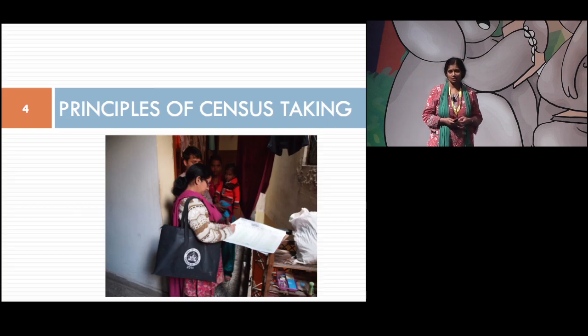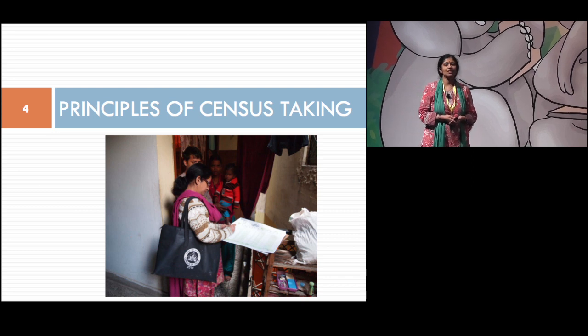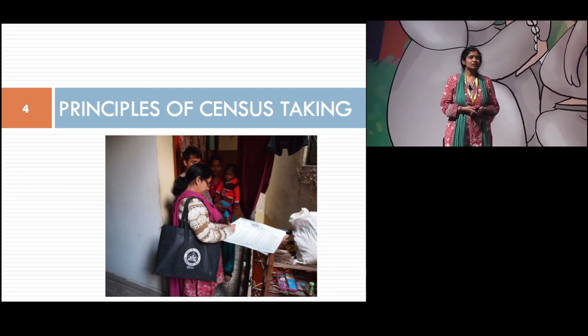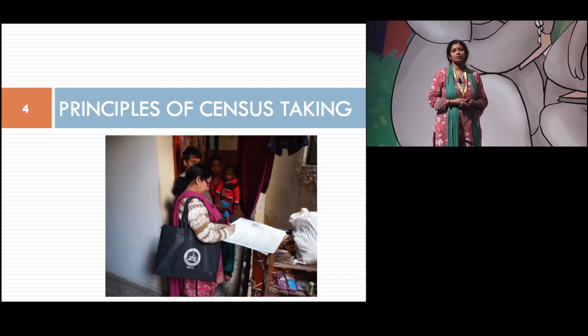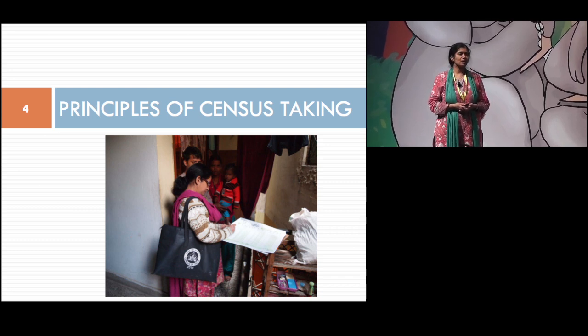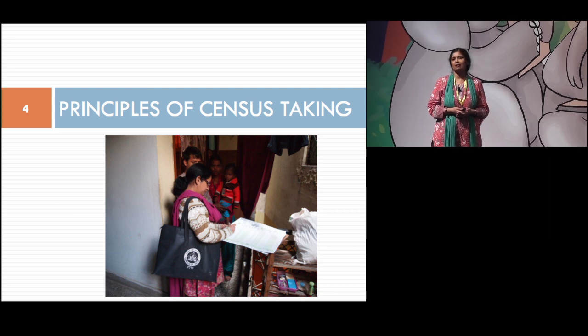So how do we go around doing this? How come we are able to give you the original population very early, weeks after completing the census? Of course, we have a long history, we've been learning over time. The first time we did the census was in 1872. But there's something more to how we do it, it's the basic principles on which we do the entire work, that make sure that we give you good data, clean and reliable data.